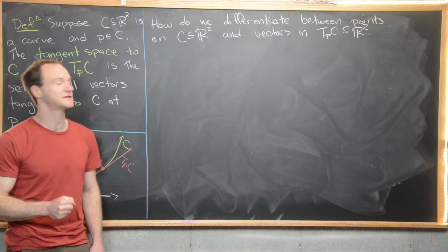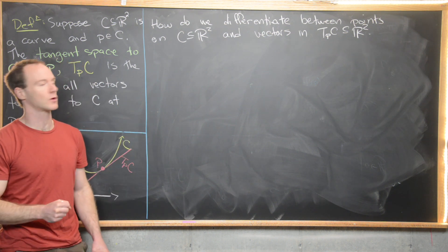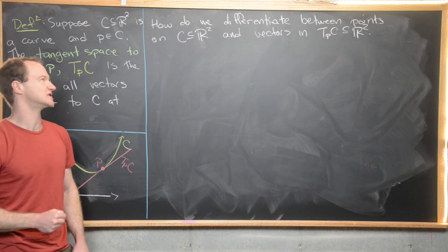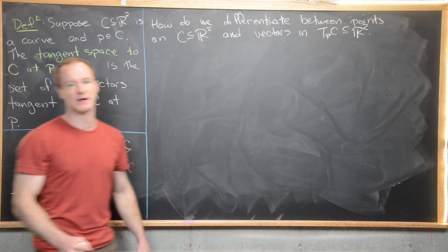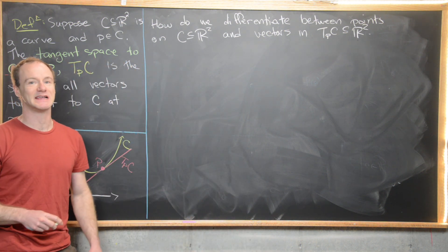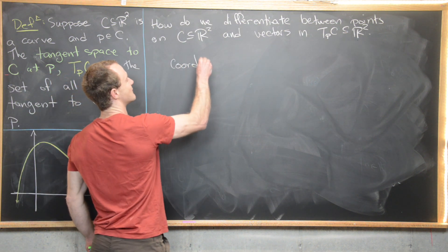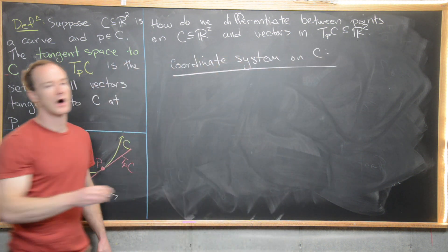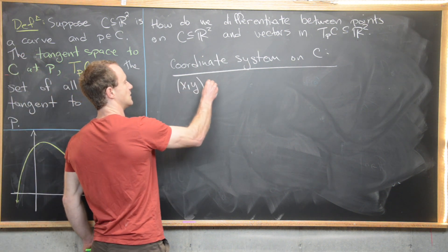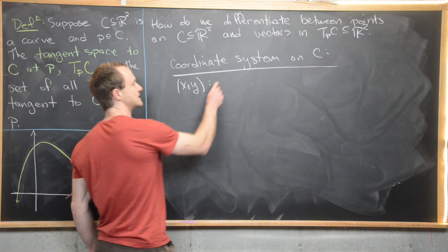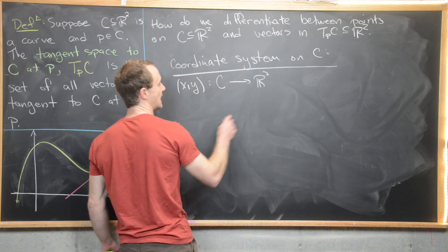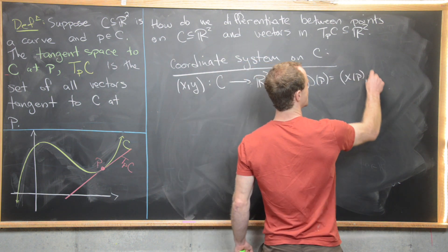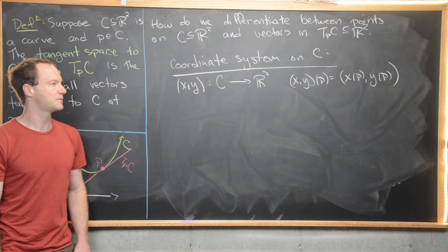Now that we've looked at a Calculus 1 example of tangent spaces, we want to look at the following important question: how do we differentiate between points on the curve and vectors in the tangent space? Notice they both kind of live in this ambient space R2. We're going to do that by taking different coordinate systems. We'll have a coordinate system on the curve given by a function with two components, x and y, that goes from the curve to R2 and takes points on the curve to ordered pairs (x of P, y of P).